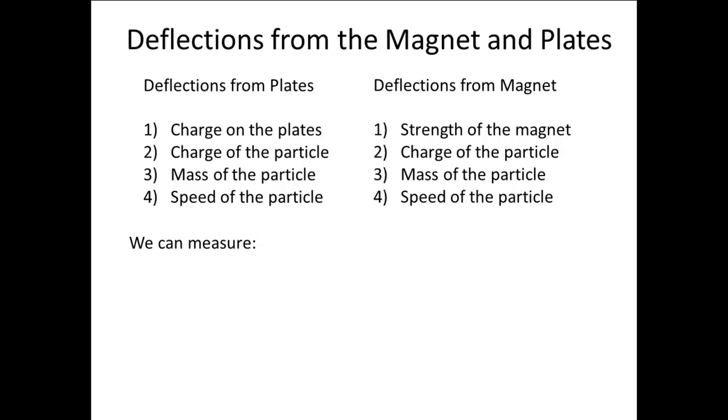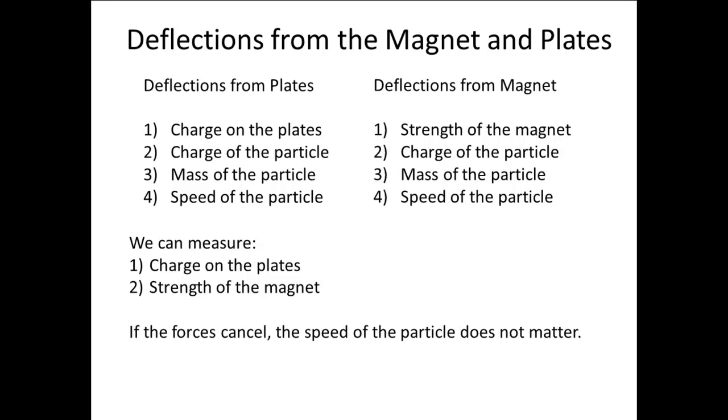We can easily measure the charge on the plates and the strength of the magnet. But we cannot measure the charge on the particle, the mass of the particle, or the speed of the particle, all of which influence the deflection. However, when we combine the magnetic force and the electric force from the plates so that the forces are equal, the speed of the particle becomes irrelevant.